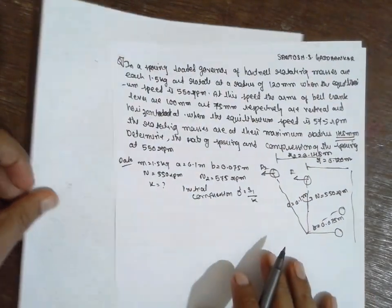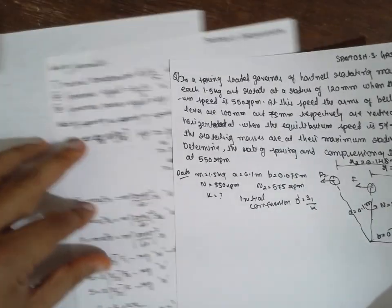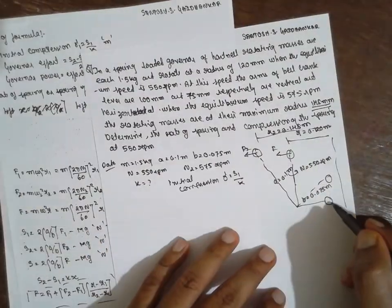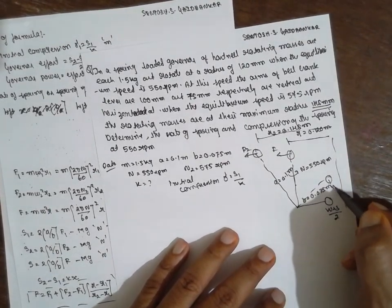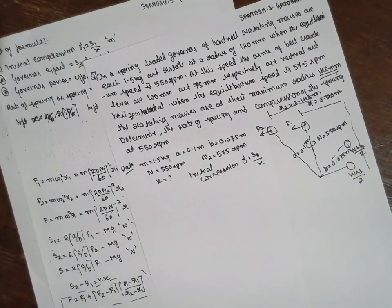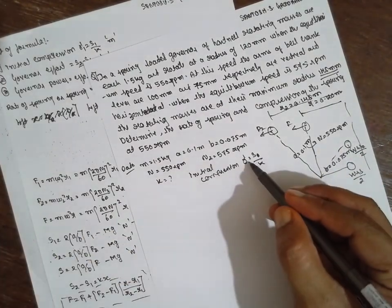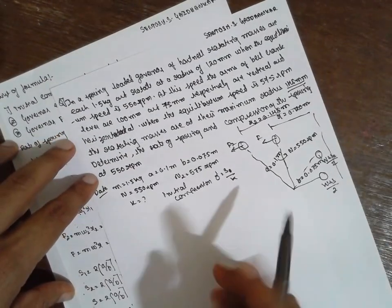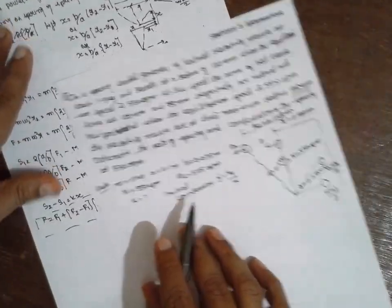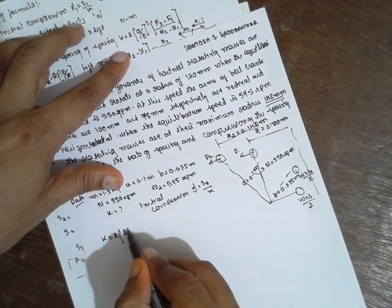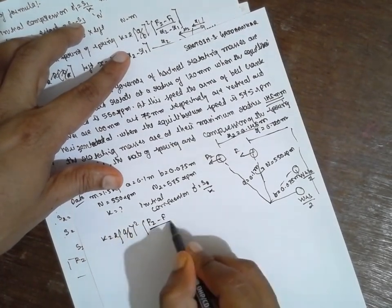This is the formula. Delta is equal to S divided by K. The formula for stiffness K should be applied between the average and maximum conditions. K is equal to 2 times (A divided by B) whole squared, multiplied by (F2 minus F) divided by (R2 minus R). This is the formula for the stiffness of the spring.